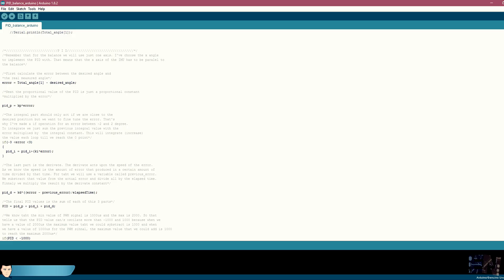In this case, I've used the y axis because in the way I've placed the IMU module, that is the parallel axis with the metal bar. First, we calculate the error as mentioned before. We create the proportional value of the PID control.